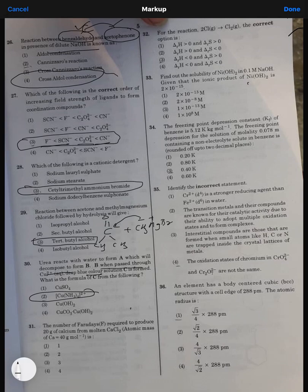The number of Faradays of electricity required to produce 20 grams of calcium. 40 grams is the weight, so for 40 grams it's 2 Faradays. Obviously for 20 grams it's 1 Faraday.